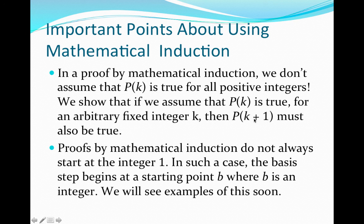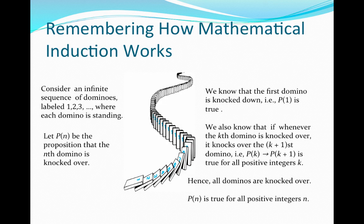You may still be wondering how this really proves a property for all natural numbers with only two steps, so let's look at a particular example. We consider an infinite sequence of dominoes labeled with positive integers: 1, 2, 3, 4, and so on. We let the property P(n) of the natural number n, which is the label on the domino, be the proposition that the nth domino is knocked over. We need to prove that every domino is knocked over — that is, prove P(n) for every positive integer n.